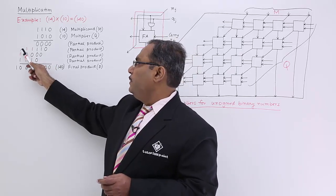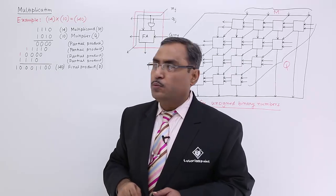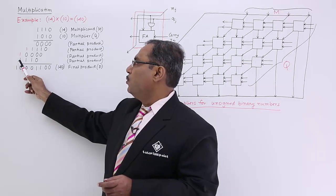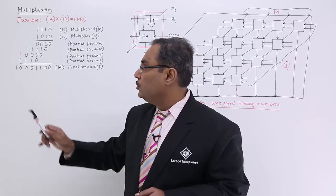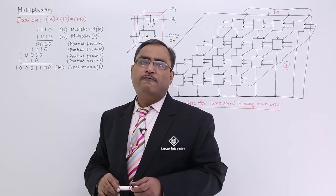But it's 1 plus 1 is 2. 2 means 10. So 1 will be going there, 0 will be coming here. 1 plus 1 means 2. 2 means 10. So 1 will be going there and 0 will be coming here. 1 plus 1 means 2 means 10. So 1 and 0 will be coming here. So I will be getting this particular final product.